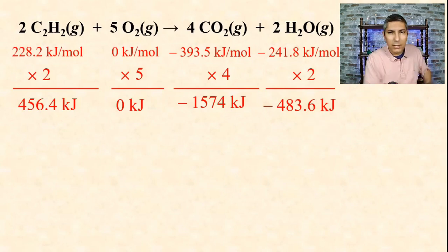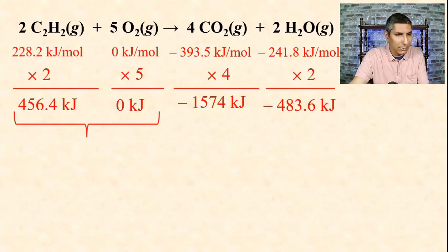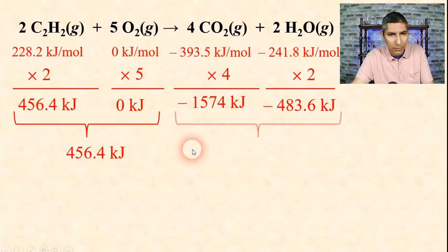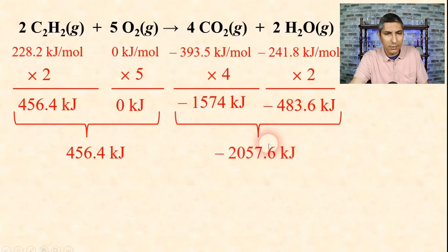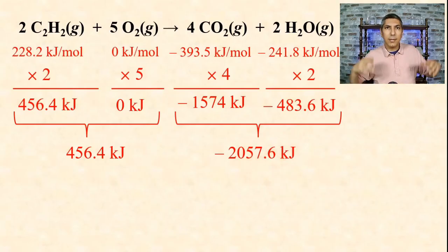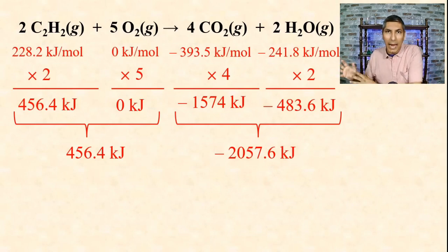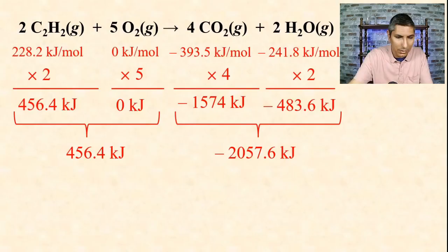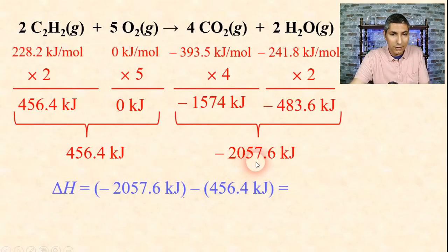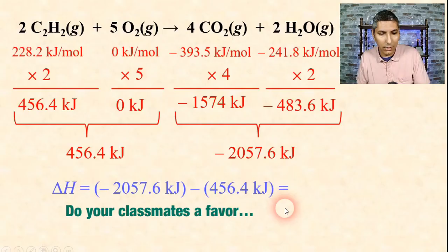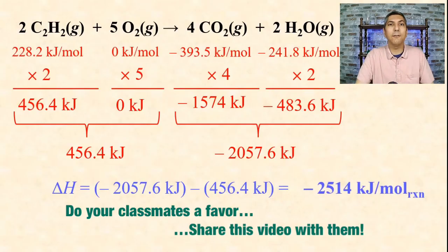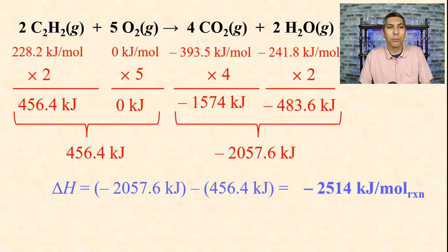We have to add up all the products and all the reactants and do our subtraction. The reactants are 456.4 and zero, so that's just 456.4. When we add up the products, negative 1,574 minus 483.6 gets us a total of negative 2,057.6 kilojoules. To get delta H overall, it's the sum of the products minus the sum of the reactants, basically the right side minus the left side. We take negative 2,057.6 kilojoules and subtract 456.4 kilojoules. When you punch that into your calculator, you find that the answer is negative 2,514 kilojoules per mole of reaction.